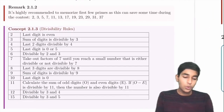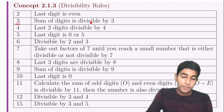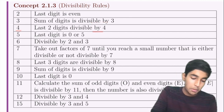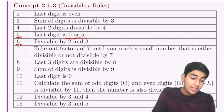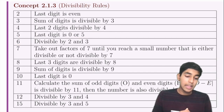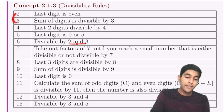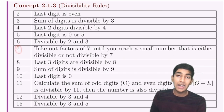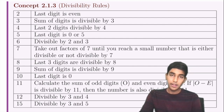Divisibility rules: For 2, the last digit must be even. For 3, the sum of digits is divisible by 3. For 4, the last two digits are divisible by 4. For 5, the last digit is 0 or 5. For 6, it must be divisible by both 2 and 3. For 7, subtract multiples of 7 until you reach a small number.